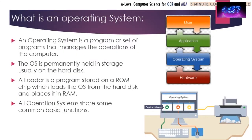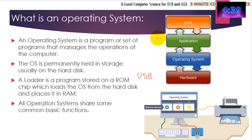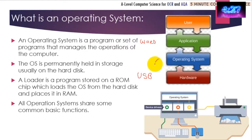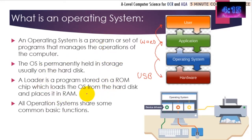An operating system is essentially the go-between between a user and some hardware, or a user and an application. Assume you've got some work on a USB and you're using an application — let's say Microsoft Word. How does Microsoft Word get hold of the file on the USB? It has to go through the operating system. The operating system contacts the USB, collects the data, passes it on to the application, which is then displayed on screen.